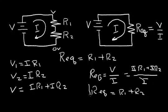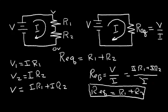So we've used Ohm's Law and shown that the equivalent series resistance is just the sum of the resistors. In a series circuit, the equivalent resistor will always be bigger than any of the individual resistors in the series circuit.